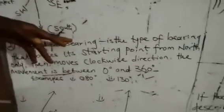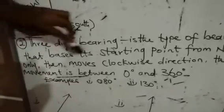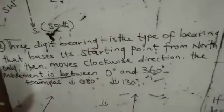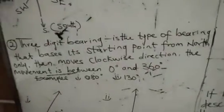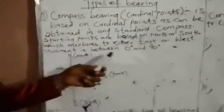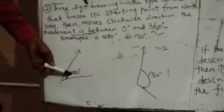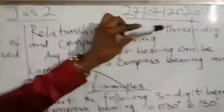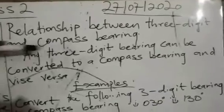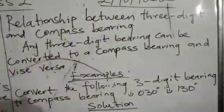We have the second type of bearing, which is the three-digit bearing. The three-digit bearing — we added a zero to make it three digits, for example 080 degrees. Any three-digit bearing can be converted to compass bearing and vice versa.